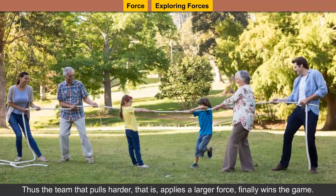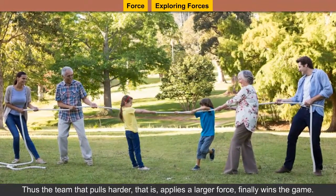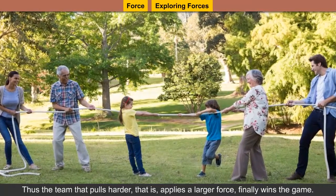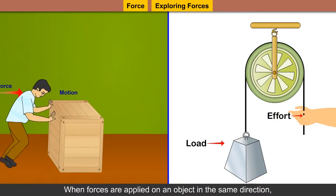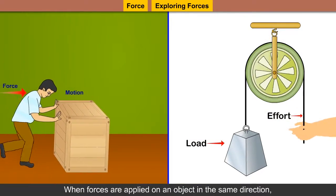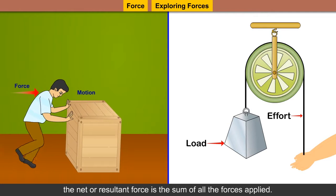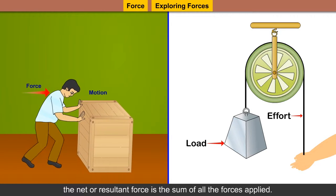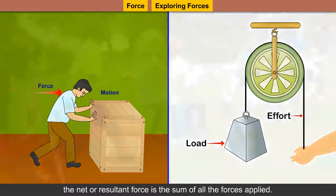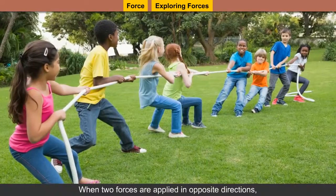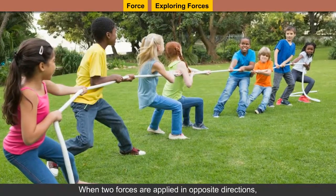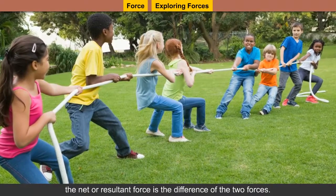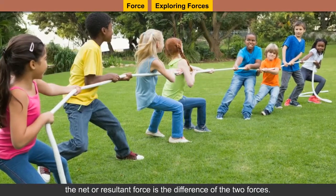But the rope will move in the direction of the team that applies more force. Thus, the team that pulls harder — that is, applies a larger force — finally wins the game. When forces are applied on an object in the same direction, the net or resultant force is the sum of all the forces applied. When two forces are applied in opposite directions, the net or resultant force is the difference of the two forces.